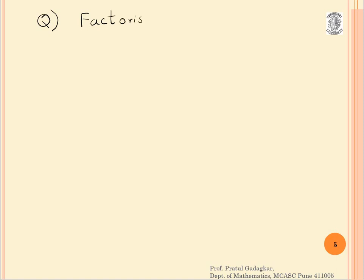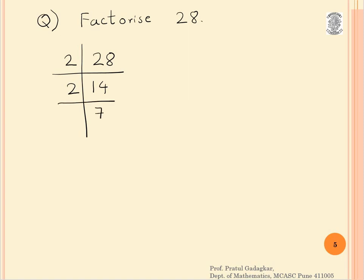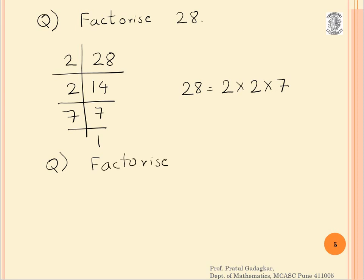Let us take one more example. If we factorize 28: 28 ÷ 2 = 14, 14 ÷ 2 = 7, 7 ÷ 7 = 1. So 28 = 2 × 2 × 7. All these numbers are prime numbers. For practice, you can try the factorization of 56.